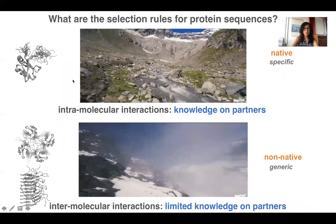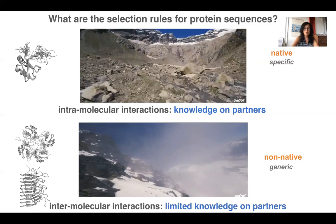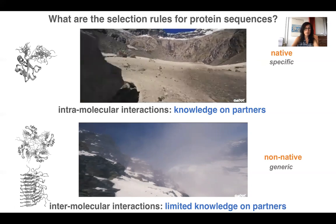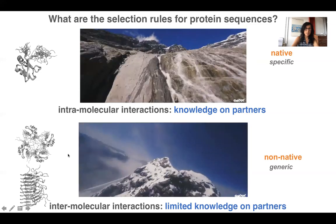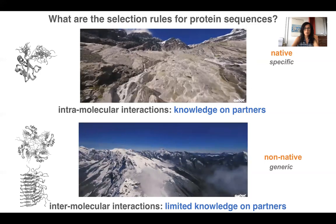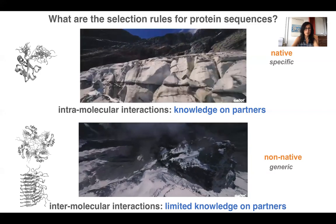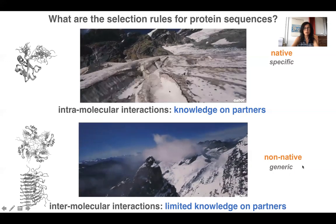We may better understand this using an analogy of a drone. Let's consider a protein sequence to be a drone which undergoes the training of evolution. For intramolecular interactions, the partners are fairly well known — because these are the other parts of the sequence — therefore the interactions which are evolved are very specific: these are the native-like interactions. But for intermolecular interactions, conditions are less clear, and the protein sequence has limited knowledge of its partners, because the partners may change abruptly and very frequently under different cellular conditions. So these interactions are not specific; they should be generic and non-native ones.